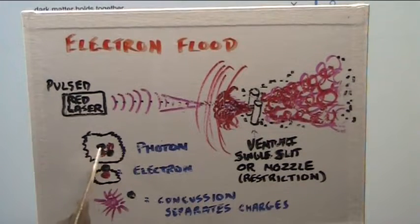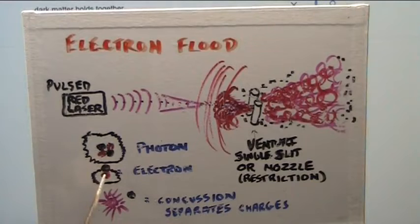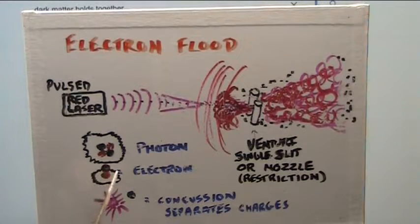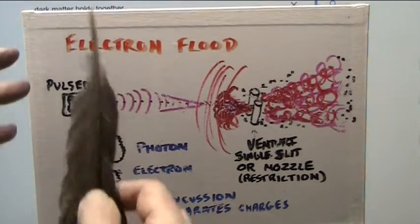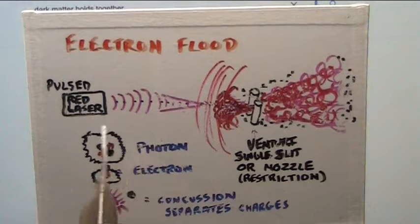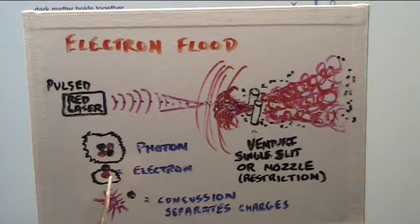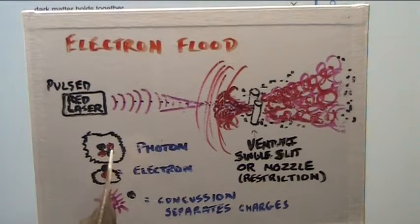That is literally what a photon looks like, and that is literally what an electron looks like, and that is literally the explosive portion of it. When it is together, it forms a photon that will bounce off of things — that will explode and kill you if it hits you, a ton of those at once.